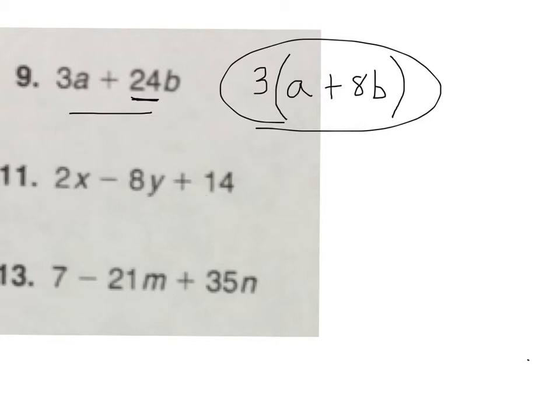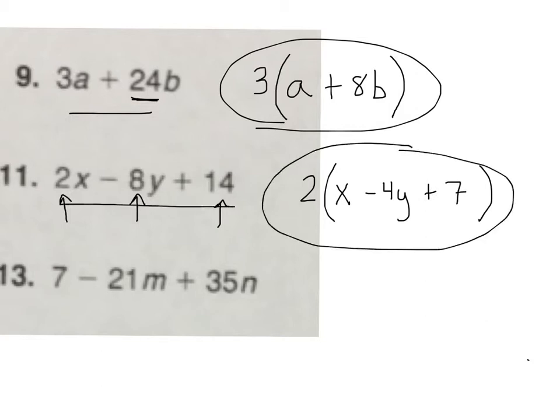So I'm going to take a two out, and then in parentheses, after I take that two out right there, what's left? X. Good. And I divide the eight by two, so I get minus four Y. And then I divide the 14 by two, and I get plus seven. And so this right here is our starting problem completely factored. Remember, factored just means undistributed, right?